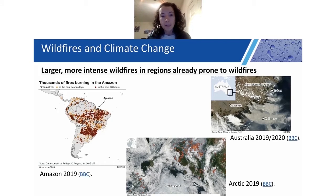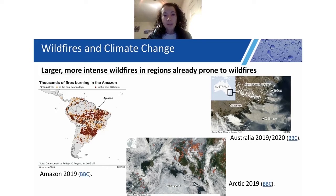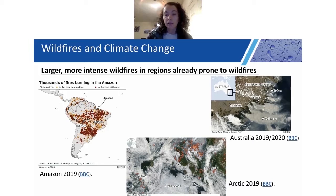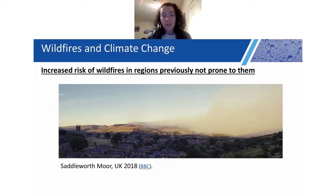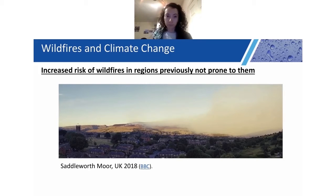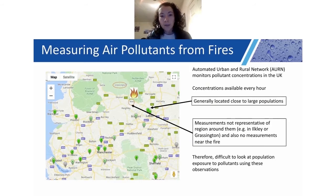In regions where fires already occur, they are projected to become larger and more intense. We saw examples of this last year — in the Amazon, some of the largest fires ever seen occurred, and much of the Arctic was on fire during the summer. This culminated in megafires in Australia at the end of the year and into 2020. But there's also an increased risk of wildfires in regions that previously weren't prone to them — a good example being the Saddleworth Moor fire in 2018, one of the largest wildfires seen in the UK.